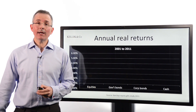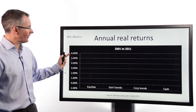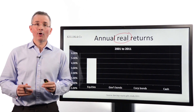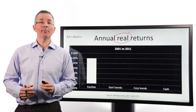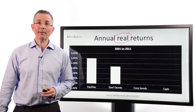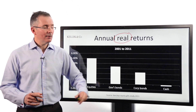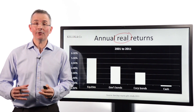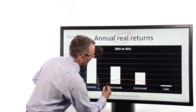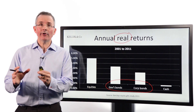Looking at annual real returns from the Barclays Equity Gilt Study, 2001 to 2011 — a 10-year snapshot — equities delivered about 5% annual real returns on average. Government bonds came in just above 3%, around 3.4%. Corporate bonds come next, and then cash. Notably, cash actually drops below zero — if you sat on cash over this period, you were actually losing money in real terms thanks to inflation.